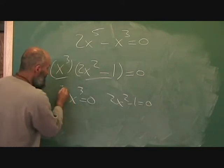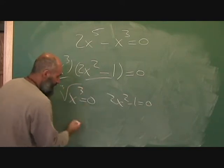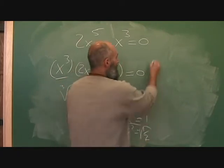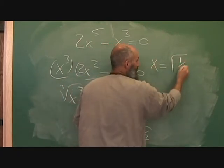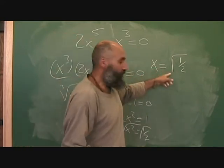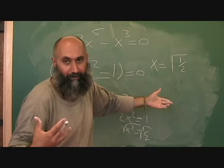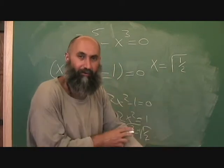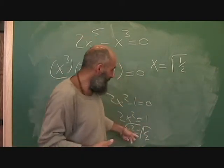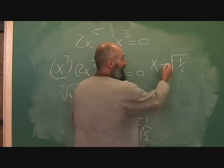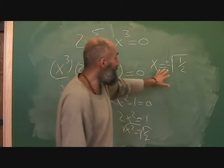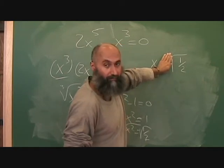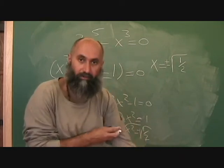Take the cube root of x cubed equals zero, so x equals zero. For 2x squared minus 1 equals zero: 2x squared equals 1, so x squared equals one half, meaning x equals square root of one half. If you're in grade 10 or above, the square root of anything is always plus or minus, so this is actually plus or minus square root of one half. If you only write the positive root, you'd only get half marks.